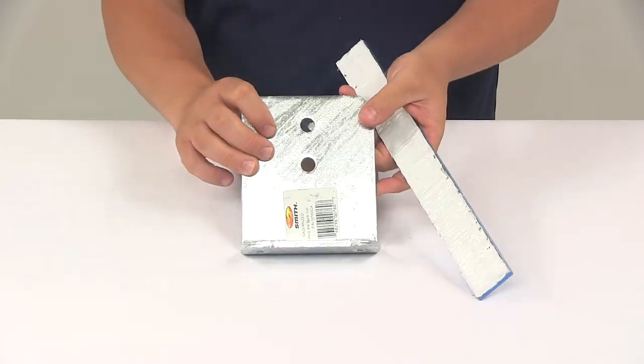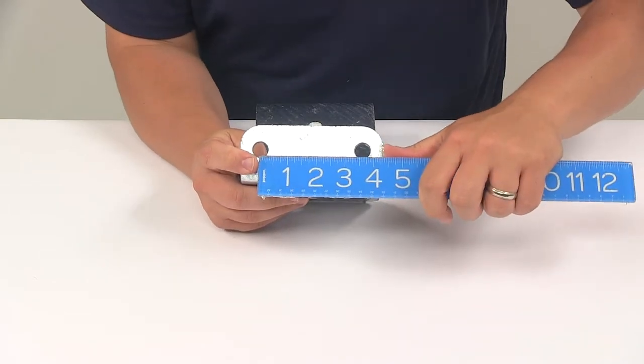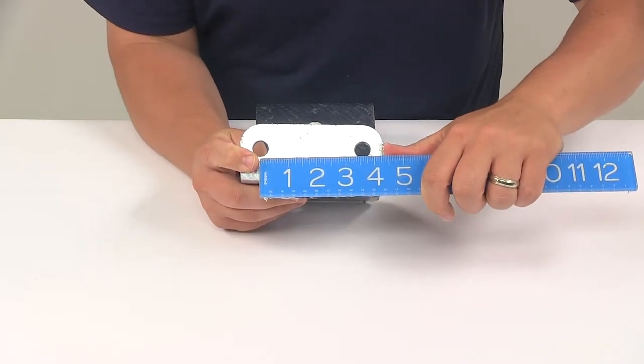The distance between the trailer mounting holes, that would be these holes right here, on center, it's going to be three and nine sixteenths of an inch.